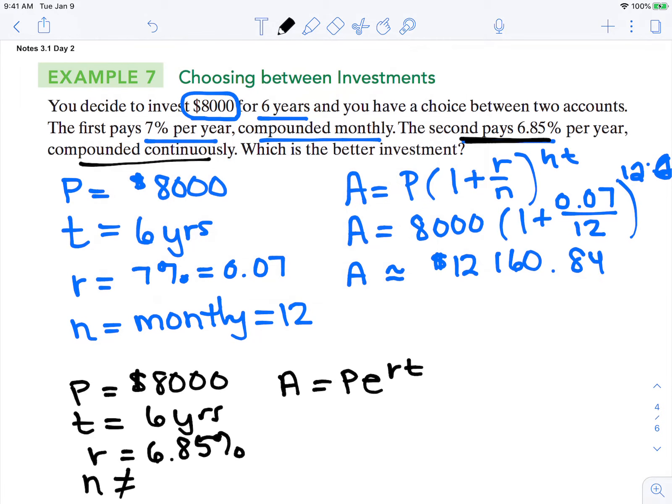Alright, the second investment. We've chosen $8,000. E is our exponential number in our calculator. Our interest rate is 0.0685 and time is 6 years. This E is in our calculator. It's approximately 2.72, but we don't want to use 2.72. We're going to actually use the button on our calculator.